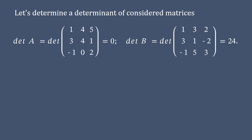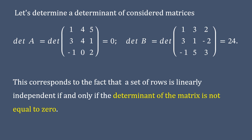We can observe that the determinant of matrix B is not equal to zero, and this shows that the rows of this matrix are linearly independent, and of course, vice versa.